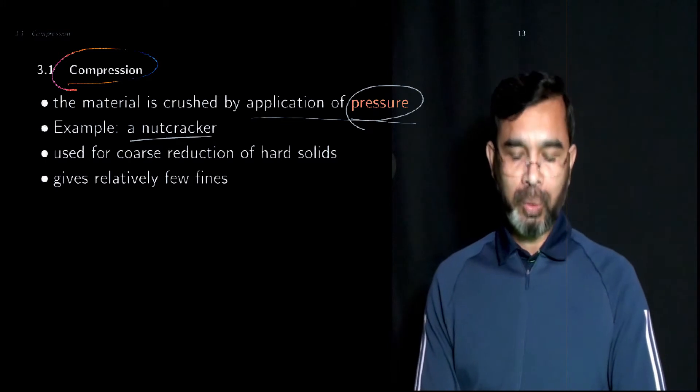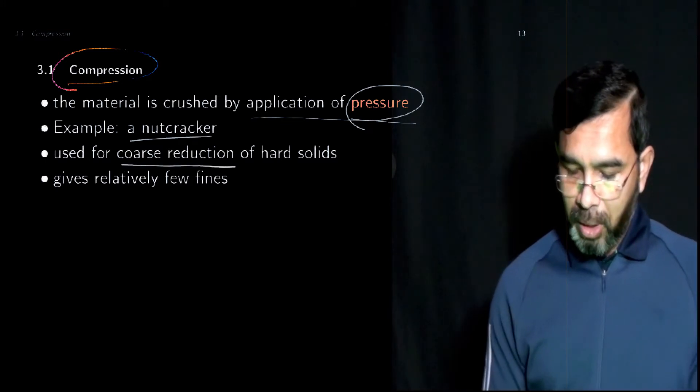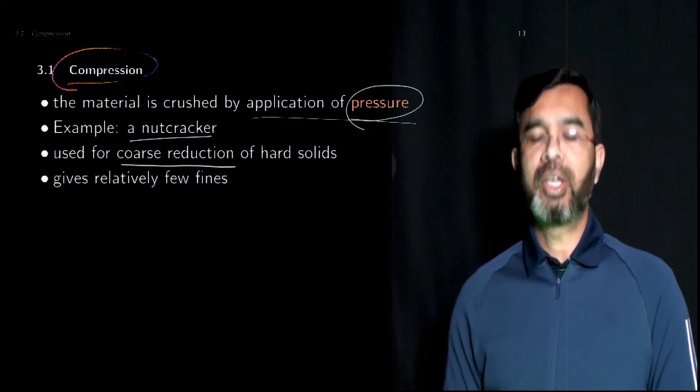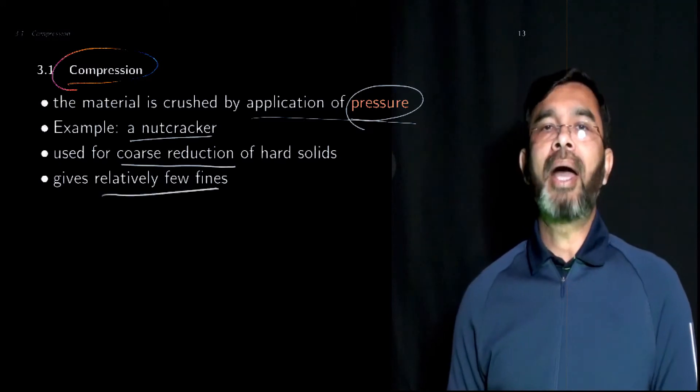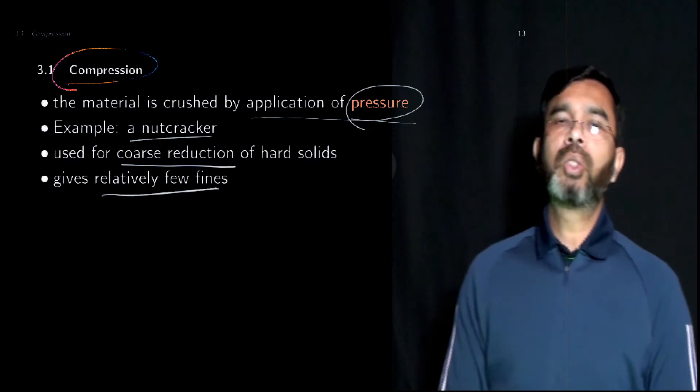A dated example can be a nutcracker where you put the nut in between two surfaces and put some pressure to crack the nuts. These are used for coarse reduction of hard solids in an industrial setting and it gives relatively few fines, so materials are broken into large pieces.